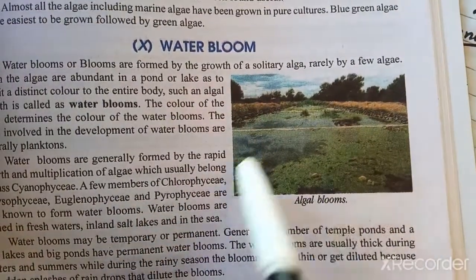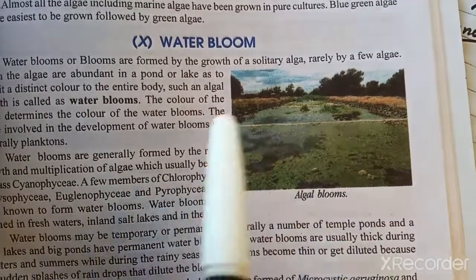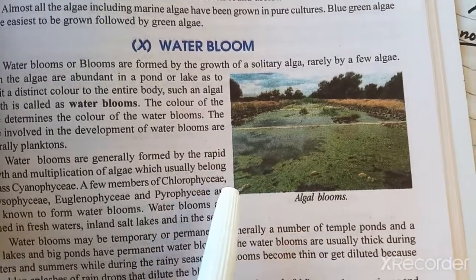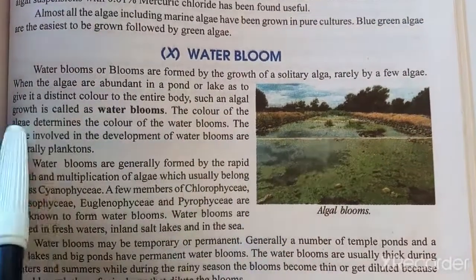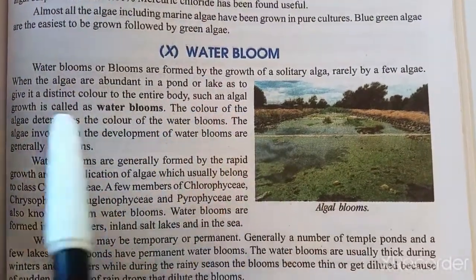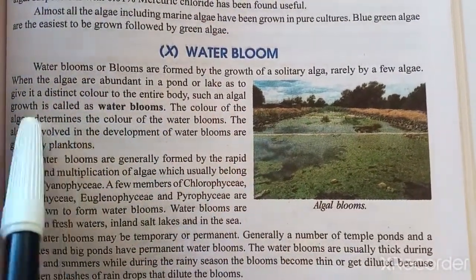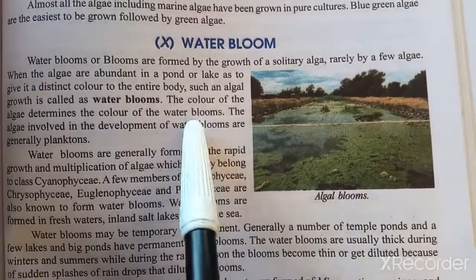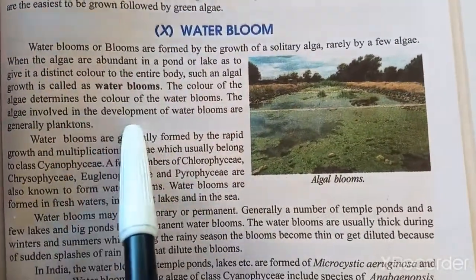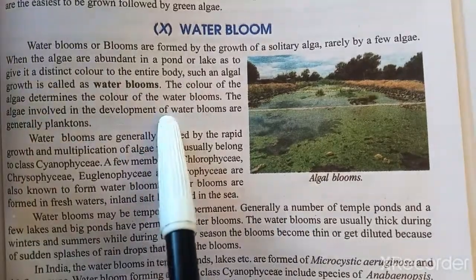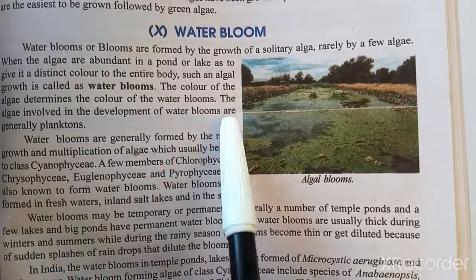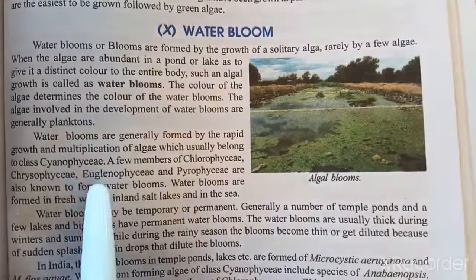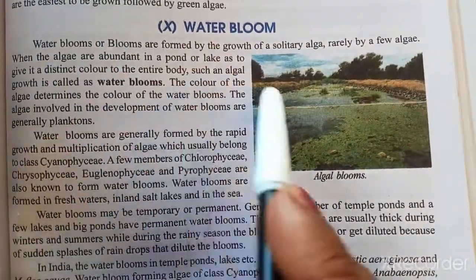Water bloom color comes from different pigments, and such algal growth is called a water bloom. The color determines the type of algae present in the water bloom. The algae are involved in the development of water blooms, and generally phytoplanktons are involved in their development.